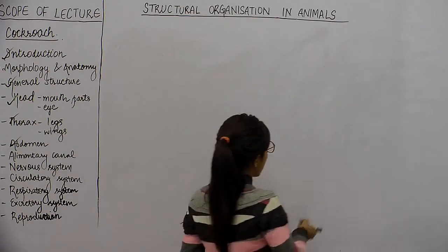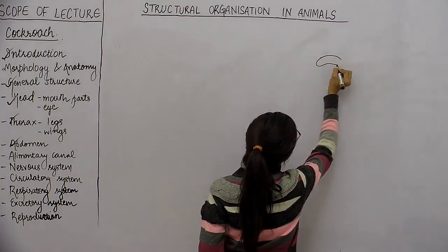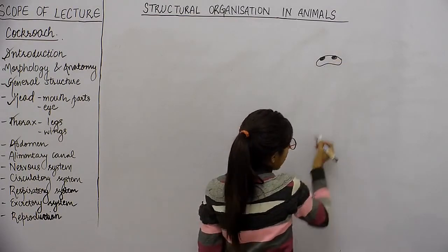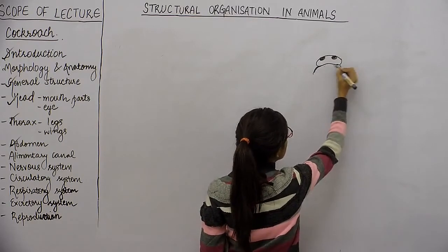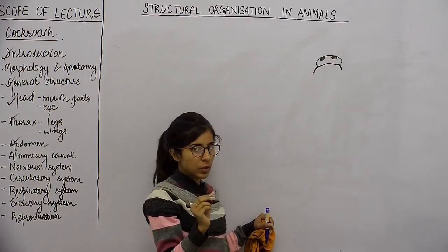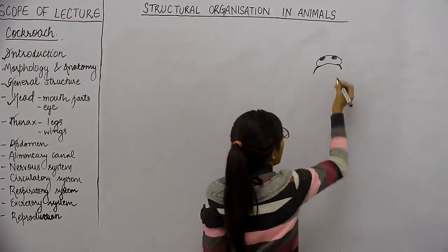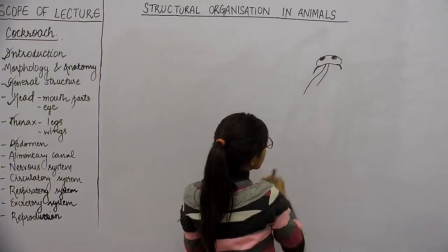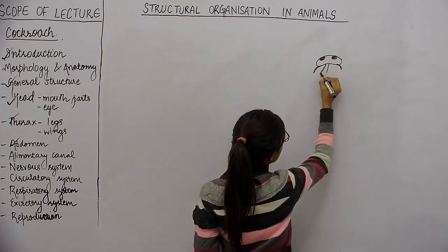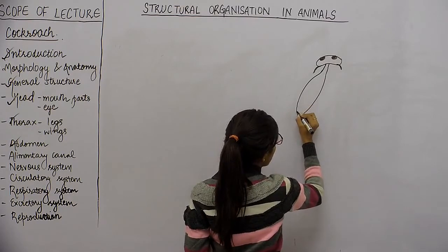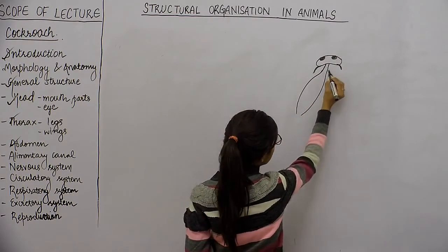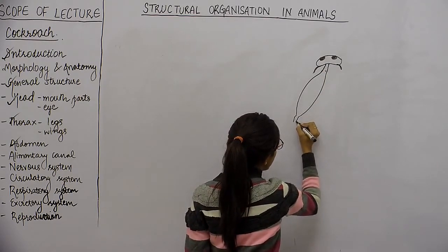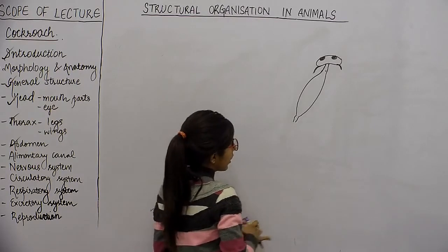So I will start with the diagram. This is the head of the cockroach. Head ke under hi, as I told you, head ke edge pe mouth present hota hai. So mouth se start hota hai buccal chamber, and buccal chamber se aata hai pharynx. Pharynx ke baad, this is the esophagus — it is somewhat broad. Then comes the crop and gizzard. Here is the gizzard.